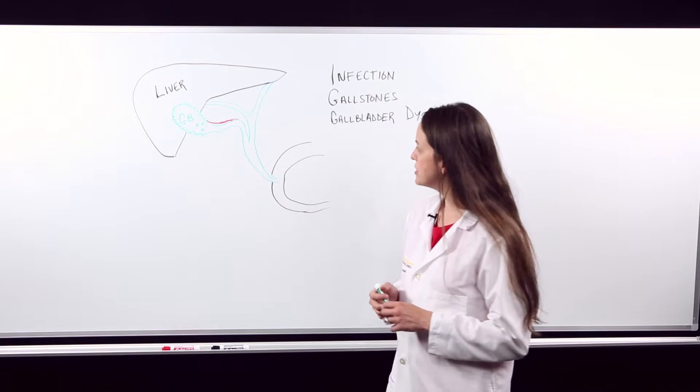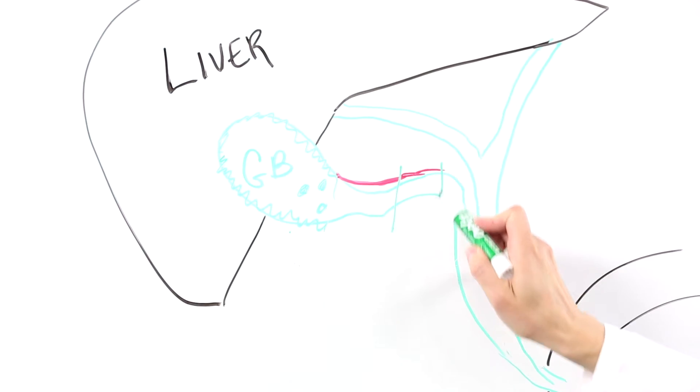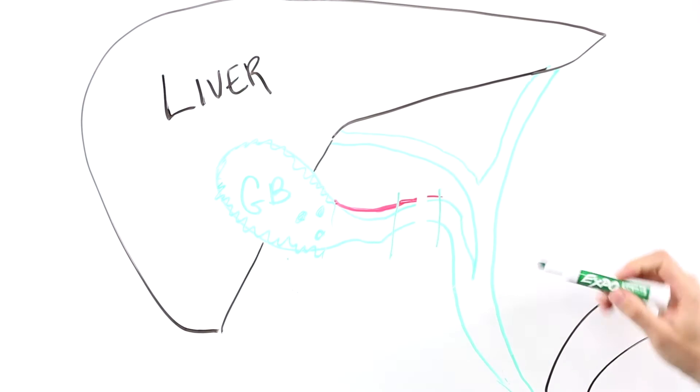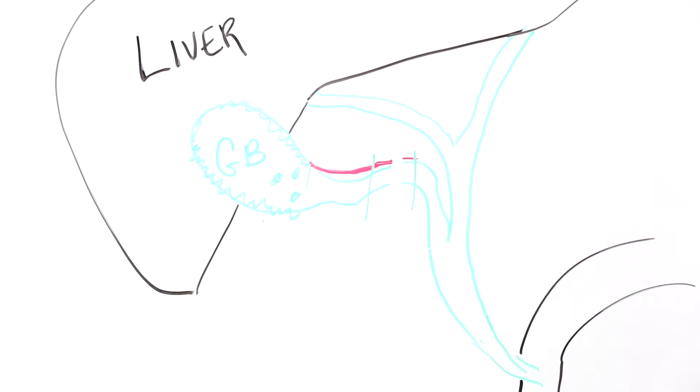When we put our instruments in, the goal is to identify the gallbladder, divide this cystic duct that drains the gallbladder down to the common bile duct, and then remove the gallbladder from underneath the liver.